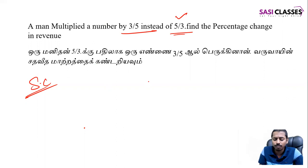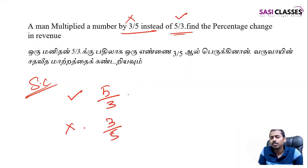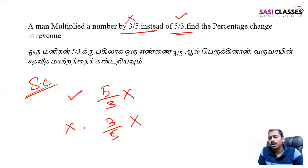The number 5/3 is going to multiply the value. Wrong value used: 3/5. Usually the correct is 5/3 of x, wrong is 3/5 of x. That's when we go to the shortcut method. The shortcut uses the denominators — the LCM of these numbers. So 3 and 5 give LCM of 15.